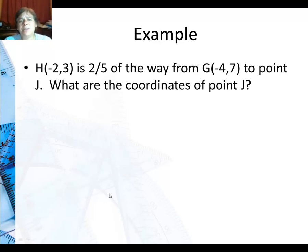So here's our example. H, with point H(-2,3) is two-fifths of the way from G(-4,7) to point J. So this is going to be my beginning because that's where I'm going from. And I want to find the coordinates of my ending point J. So you write down the formula. And what do we know?